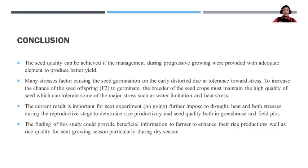In conclusion, many stresses can cause seed germination to be disrupted due to tolerance limitations to the stress. The current results are important for ongoing experiments aimed at further understanding the effects of heat and drought stress during the reproductive stage, to determine rice productivity and seed quality for both greenhouse and field plot conditions.